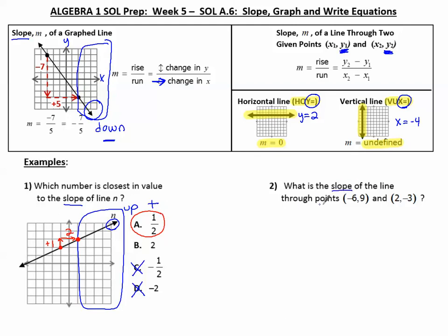What is the slope of the line through these points? Let's label these points X and Y, subscript of 1, because it's the first point I came to, and X and Y, subscript of 2, because it's the second point I came to. And we'll use the slope formula, Y2 minus Y1 over X2 minus X1. First, plugging in the Y coordinates, negative 3 minus 9, Y2 minus Y1 over, now I'll plug in the X coordinates, 2 minus negative 6.